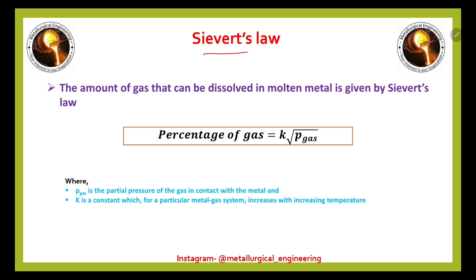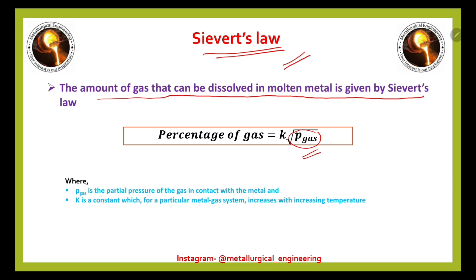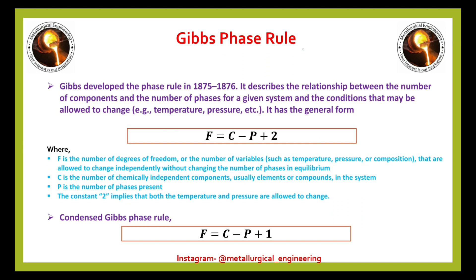Now we will see Sievert's law. In GATE examinations, we often see numericals on this important law. The amount of gas that can be dissolved in molten metal is given by Sievert's law: percentage of gas dissolved in molten metal equals K times the square root of partial pressure of that gas. P_gas is the partial pressure of the gas in contact with the metal, and K is a constant for a particular metal-gas system that increases with increasing temperature.